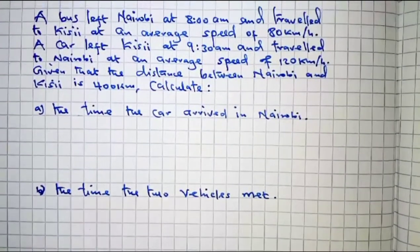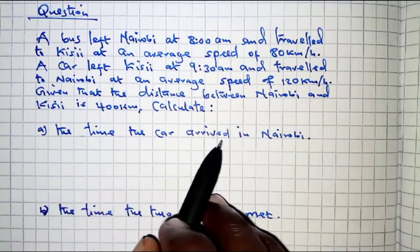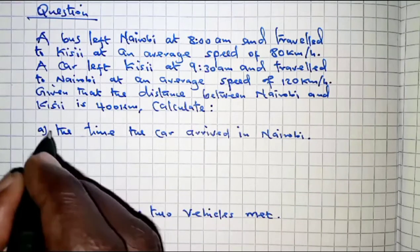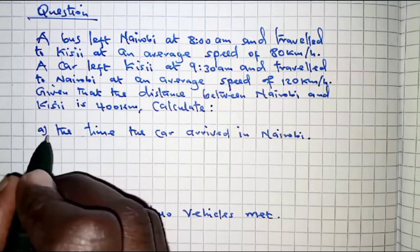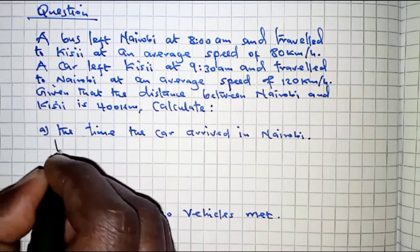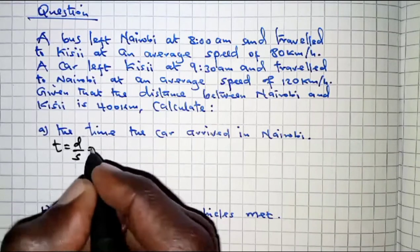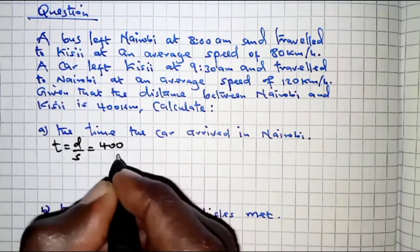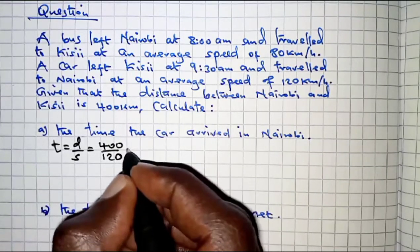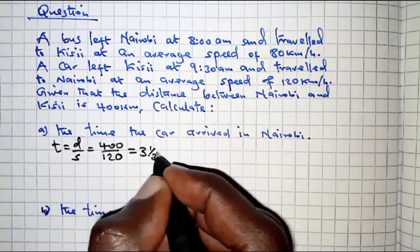For part A, we are required to get the time the car arrived in Nairobi. First, we determine the time it takes the car to move from Kisii to Nairobi. Time is given as distance over speed. The distance is 400 km and the speed is 120 km per hour, giving a time of 10/3 hours.